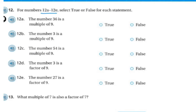For numbers 12A through 12E, select true or false for each statement. The number 36 is a multiple of 9, that is true. The number 3 is a multiple of 9, that is false. The number 54 is a multiple of 9, that is true. The number 3 is a factor of 9, that is true.